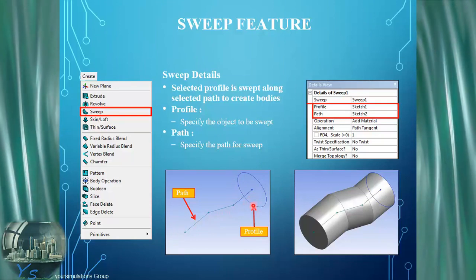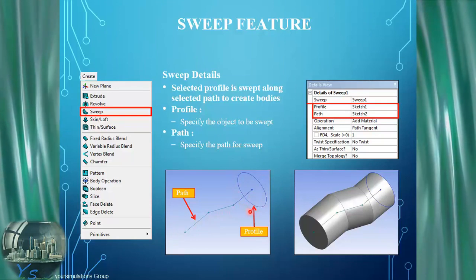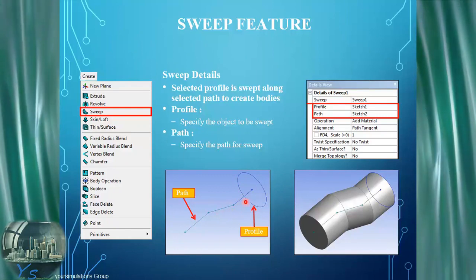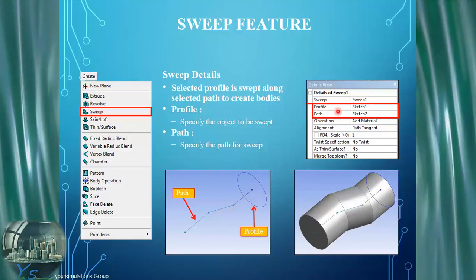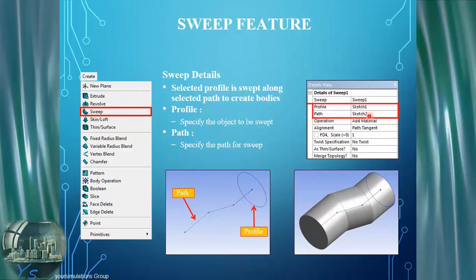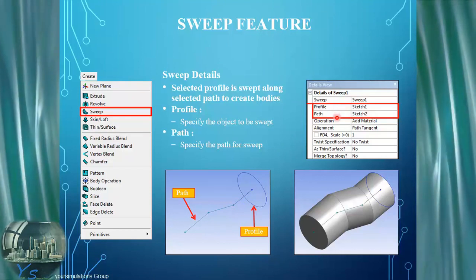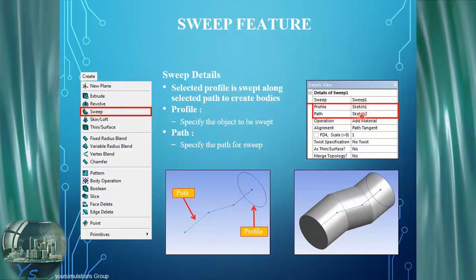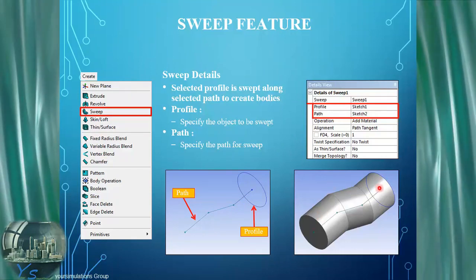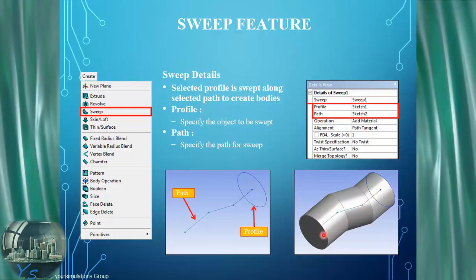Here we can see this sketch and we identify the profile. On the right hand side we see sketch 1 and sketch 2 identified as the profile and the path respectively, and it results in this body once it's pulled along the path.